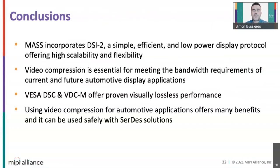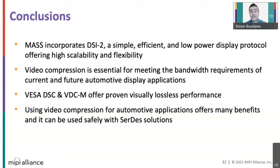We're now reaching the end of the presentation. VESA DSC and VDCM video compression, which are already adopted in DSI-2, offer proven visually lossless performance and are definitely key components in the solution to solve the challenge of increased video bandwidth in next-generation cars. Using compression for automotive applications offers many benefits and it can be used without compromising on functional safety, which is very important.